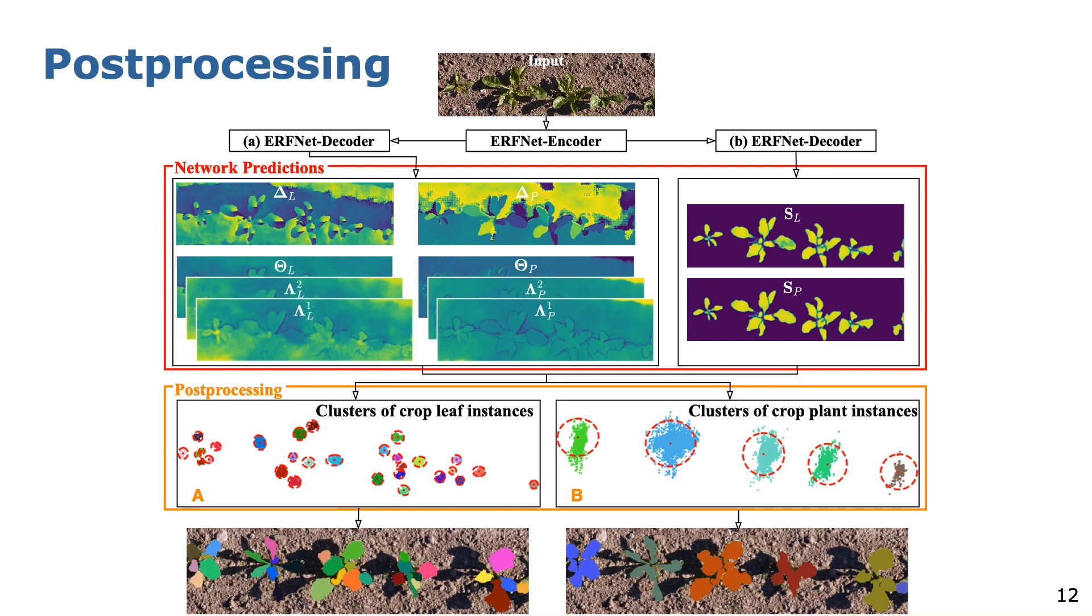In the final automated post-processing step, we exploit our network predictions to cluster all spatial embeddings of crop leaves to generate leaf instance masks as shown at the bottom left. Next, we rely on the pre-clustered spatial leaf embeddings to cluster spatial plant embeddings to model the instance mask of each plant as the union of its leaves, as shown at the bottom right.